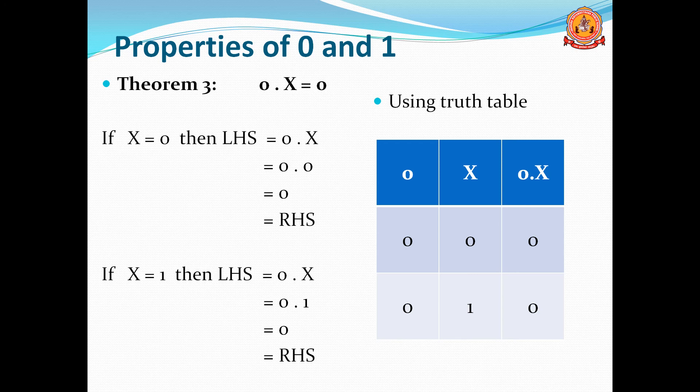Theorem 3: 0 · x = 0. Proof by induction: if x=0, LHS = 0·0 = 0 = RHS. If x=1, LHS = 0·1 = 0 = RHS. The truth table shows 0·0=0 and 0·1=0, so output is always 0. The theorem is proved.